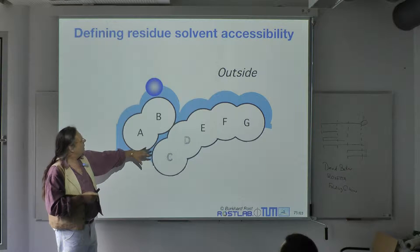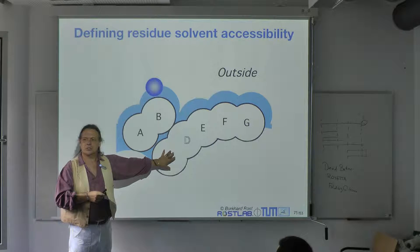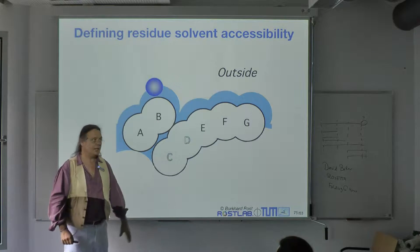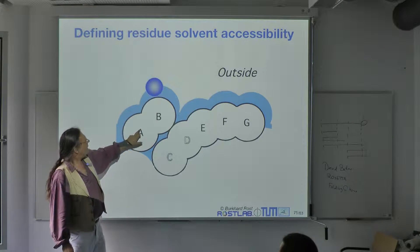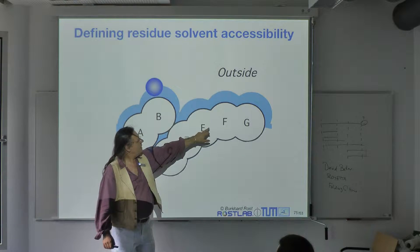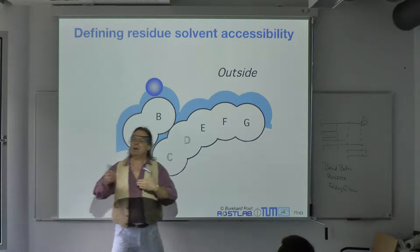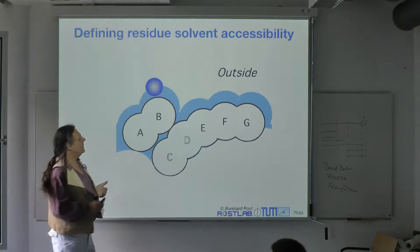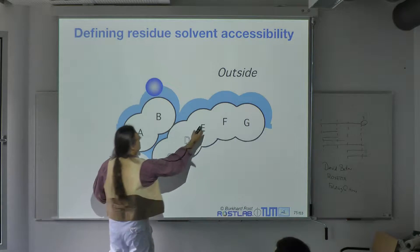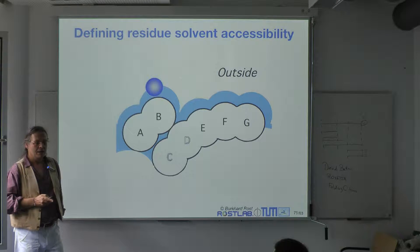In this model here, C is entirely buried, while A, B, E, F, G are somehow accessible to water. And some of those are more accessible than others.